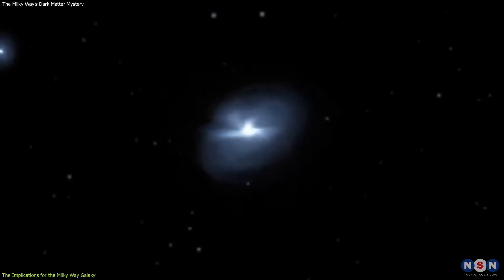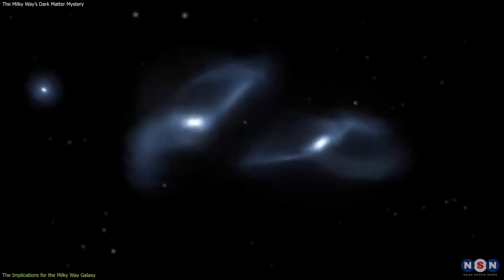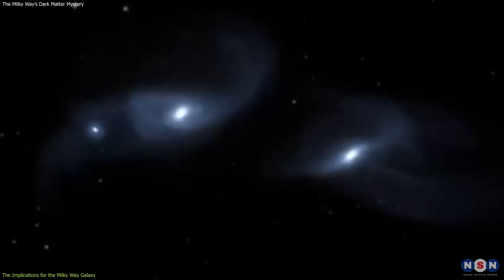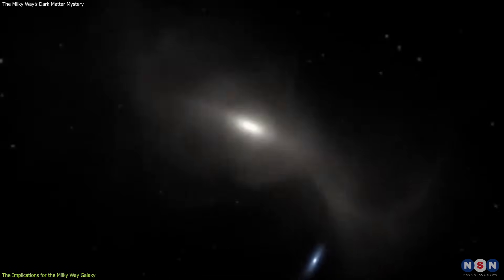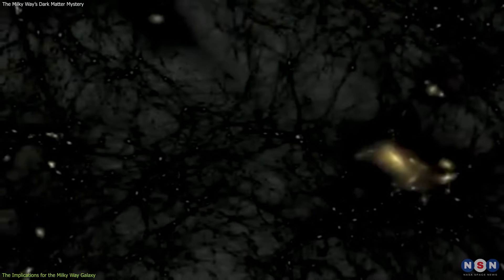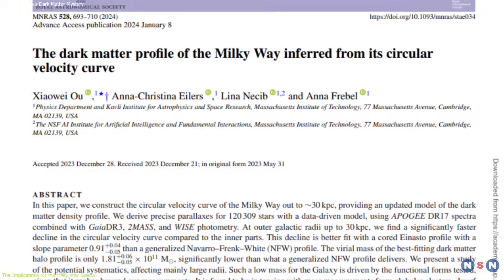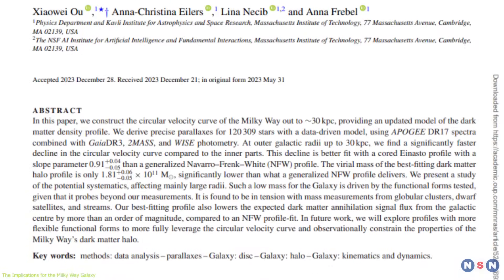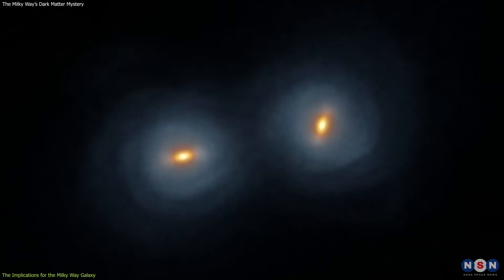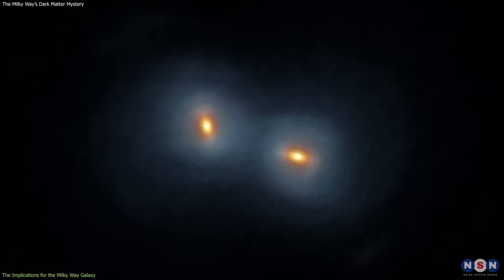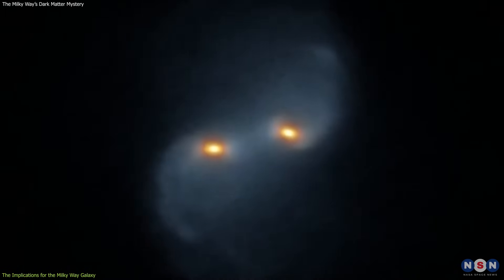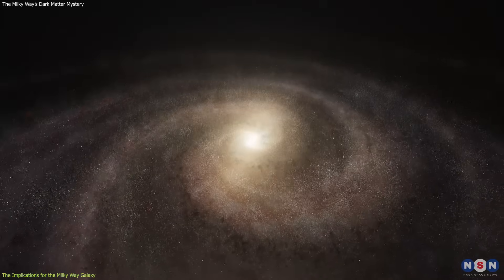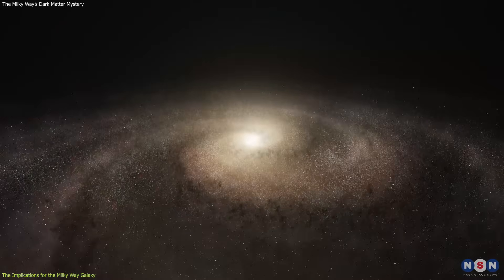Previous studies suggested that the Milky Way galaxy underwent a major merger with a large galaxy about 10 billion years ago, which formed the bulge and the halo, and that this merger brought a lot of dark matter into the core of the galaxy. However, the new study casts doubt on this scenario, and suggests that the merger may have been less violent and less dark than assumed, or that it may have happened later than estimated, or that it may have been followed by other events that altered the mass and shape of the bulge.